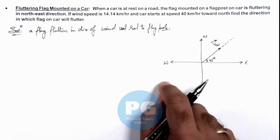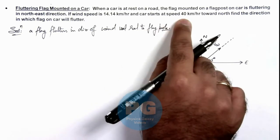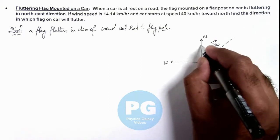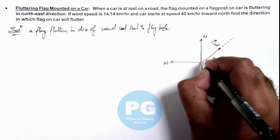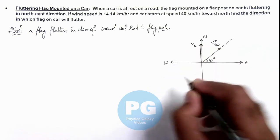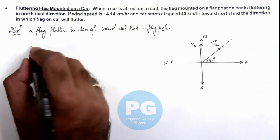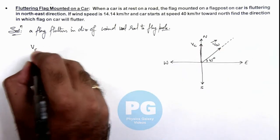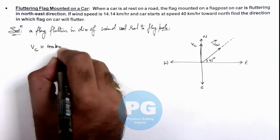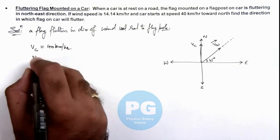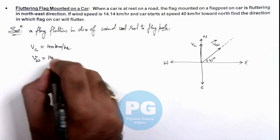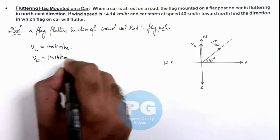When the car starts at a speed of 40 kilometers per hour toward north, this is the direction of the velocity of the car — toward north. The velocity of the car is given as 40 kilometers per hour, and the velocity of wind is also given as 14.14 kilometers per hour. Both are in kilometers per hour.